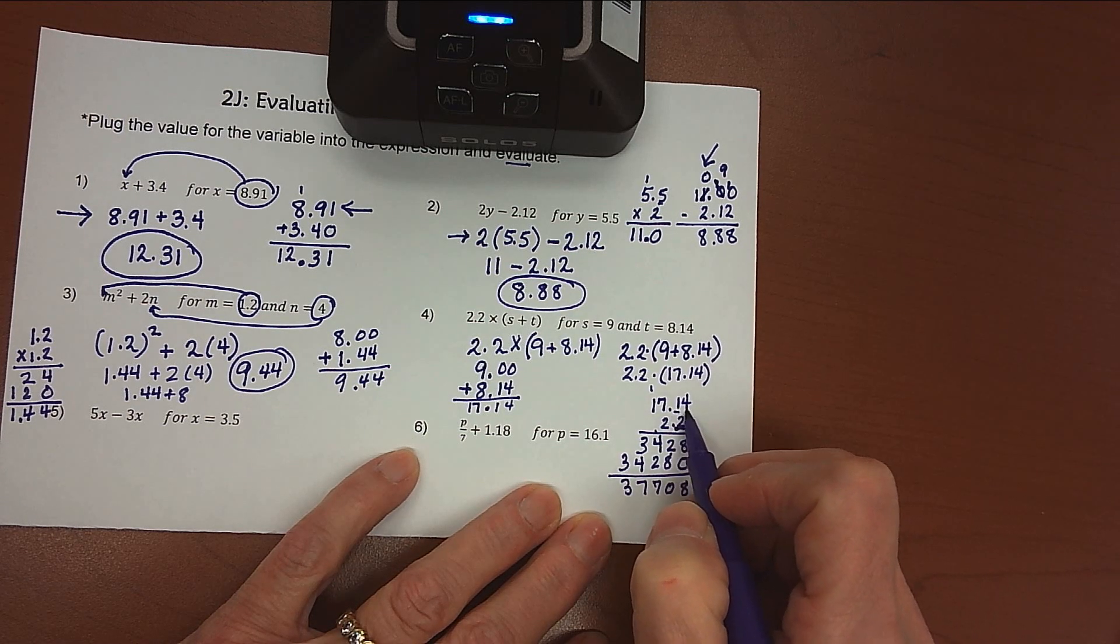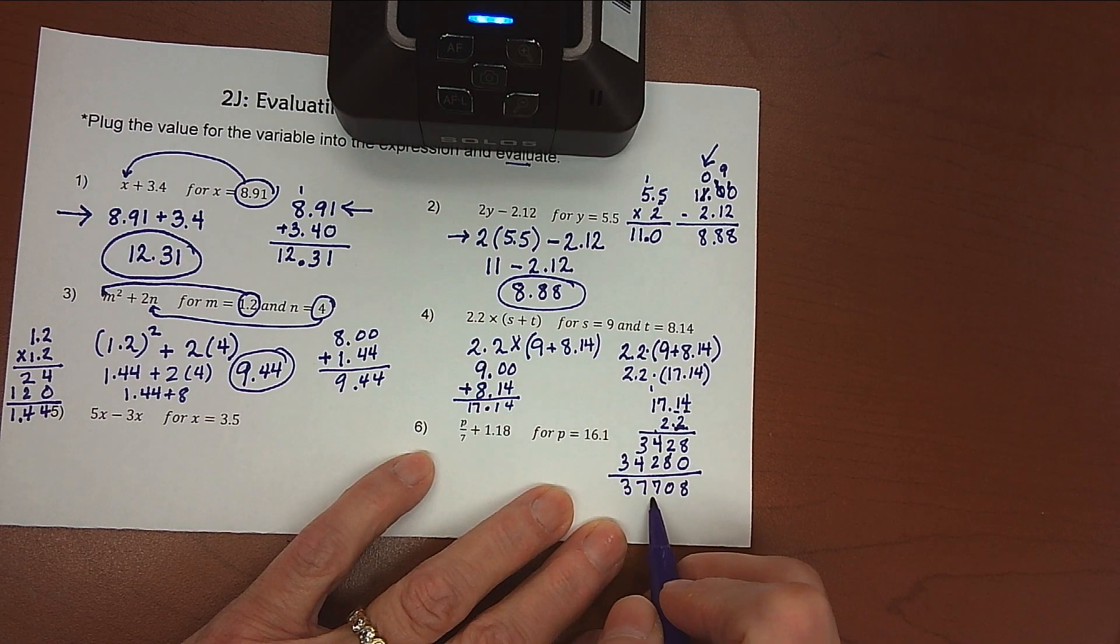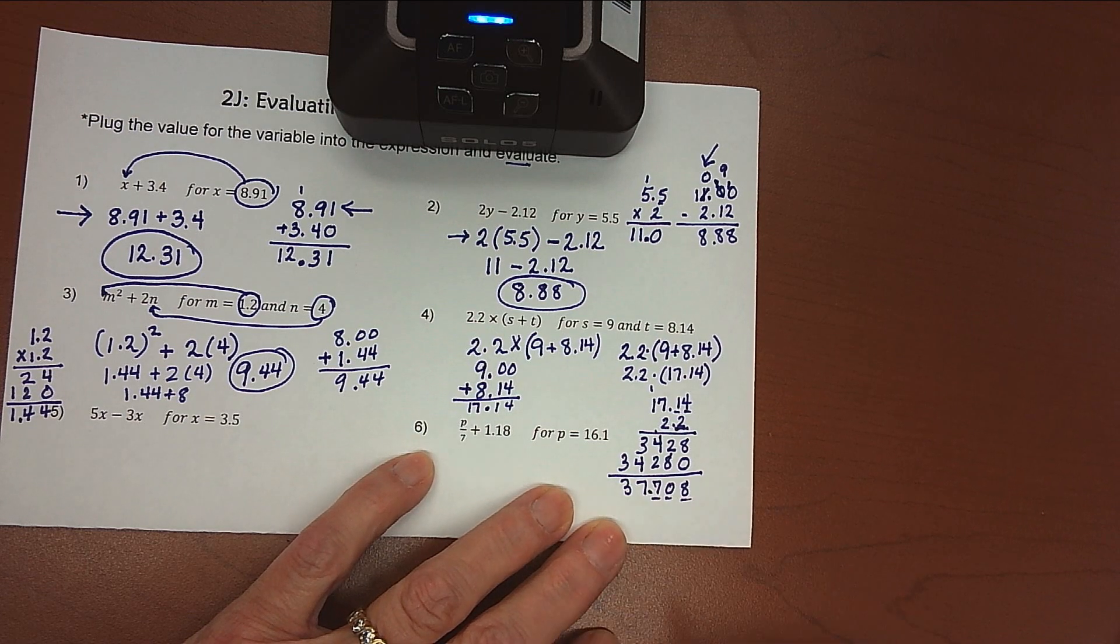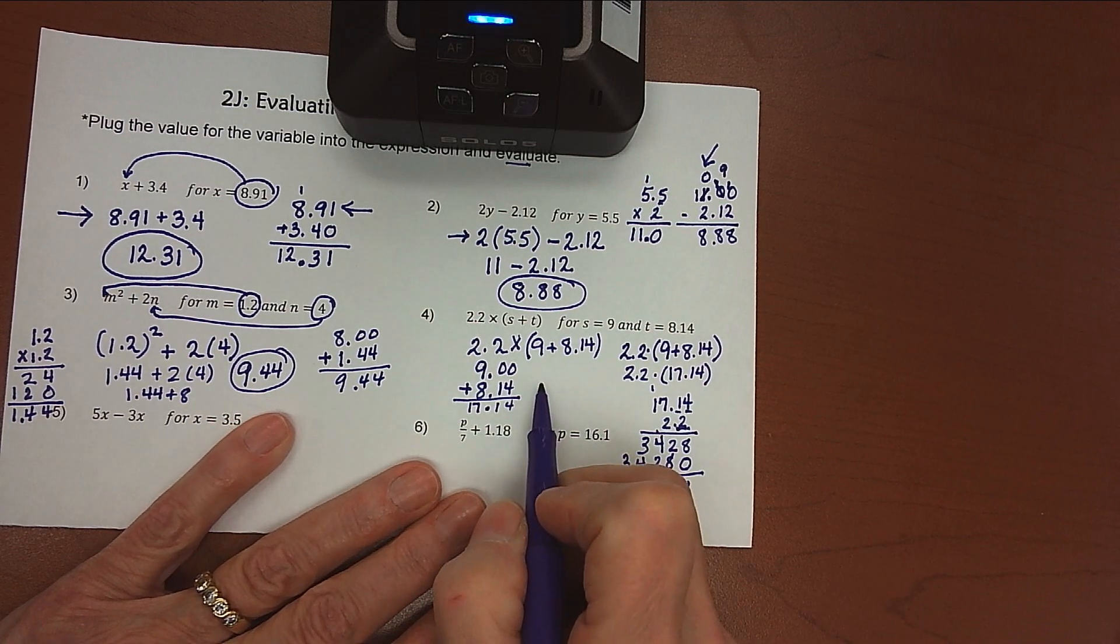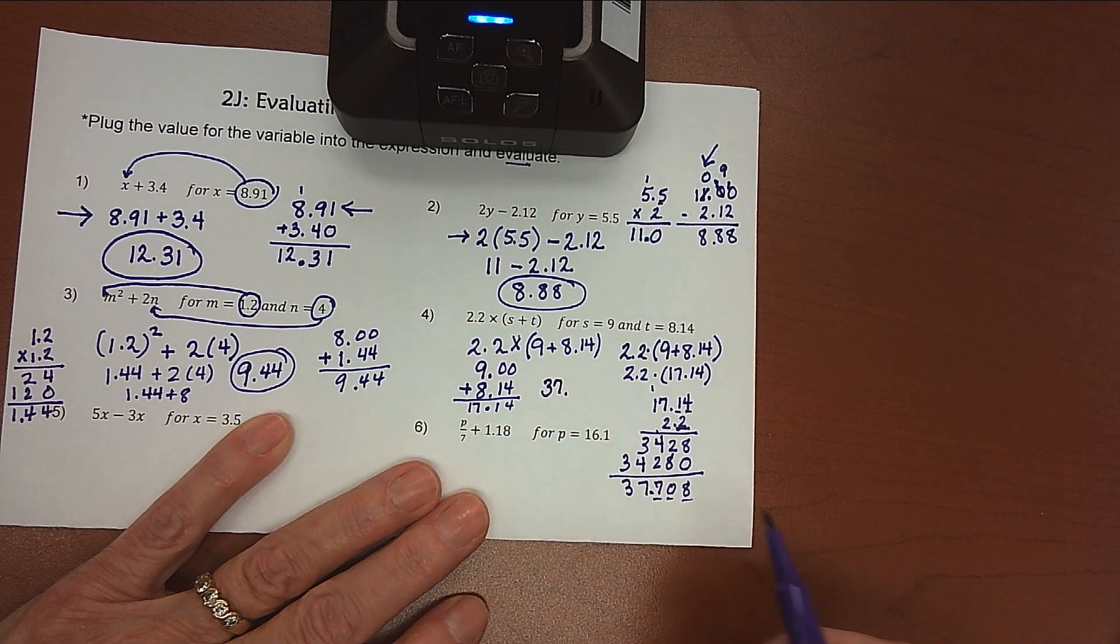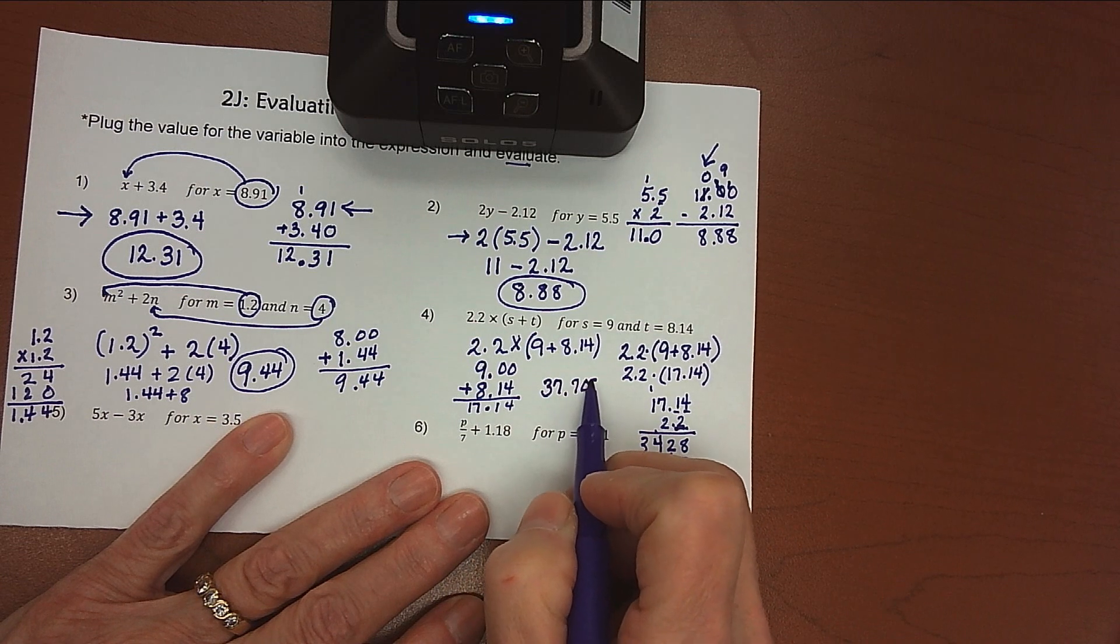1, 2, 3 numbers behind the decimal point in the problem. So 1, 2, 3 numbers behind the decimal point in the answer. And so my final answer then is 37.708.